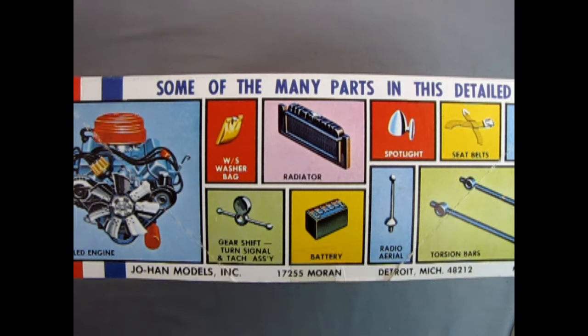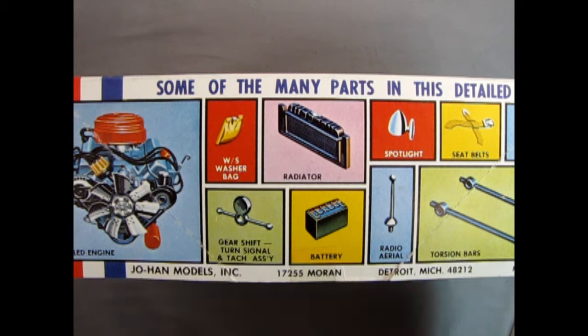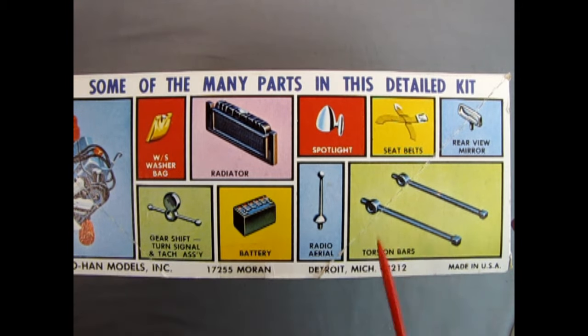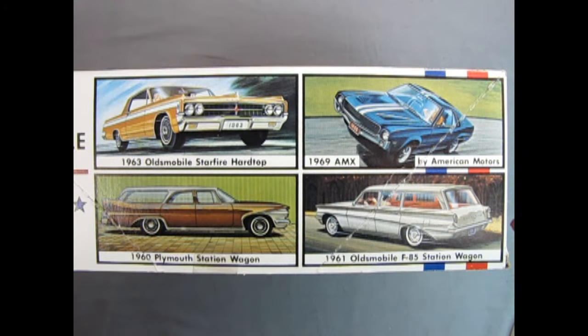On this side of the box you can see some of the many parts in this detailed kit: a detailed engine, windshield washer, washer bag, gear shift, turn signal and tachometer assembly, a radiator, a battery, radio aerial, spotlight, seat belts, rear view mirror, and the Chrysler torsion bars.